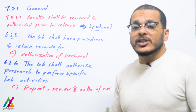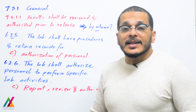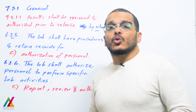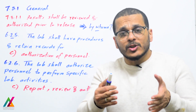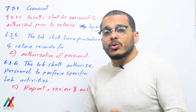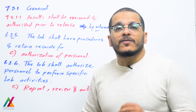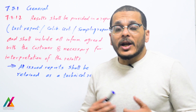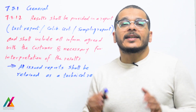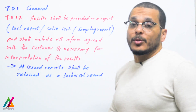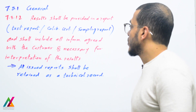If the sample is distributed between different units inside the lab, after analysis by the analyst, the result is sent to the technical lead of the unit, who will review the results to ensure they are valid and then authorize them. All results from each unit for the sample are then collected in the final report. The results shall be provided in a report — such as a test report, calibration certificate, or sampling report — after review and authorization by each unit's technical lead.